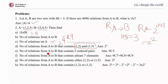Find the number of relations from A to B that contain exactly 5 ordered pairs. There are 9 elements in A×B, so we choose 5 of them: the answer is C(9,5). Next, find relations containing at least 7 elements: that means exactly 7, 8, or 9 elements, so the answer is C(9,7) + C(9,8) + C(9,9).